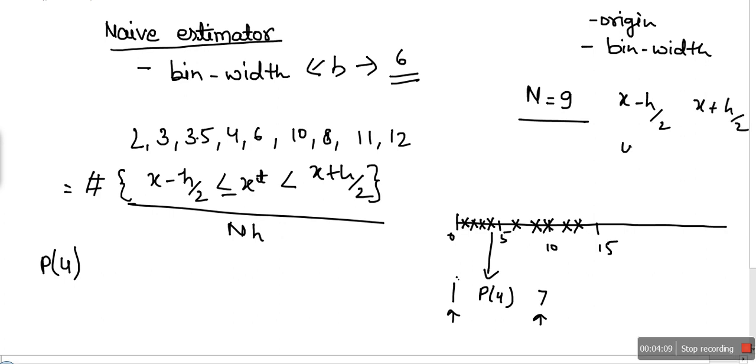What will I get? X value is 4 minus h by 2 is 3, so 4 minus 3 is 1. Four plus 3 is 7. So consider a range between 1 and 7. From here to here, I need to consider the range.